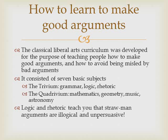There are ways to learn how to make good arguments. The classical liberal arts curriculum was developed for the purpose of teaching people how to make good arguments and how to avoid being misled by bad arguments — it consisted of seven basic subjects. The verbal arts portion was called the trivium, consisting of grammar (the study of how words are altered and combined to form meaningful sentences), logic (the study of how sentences are combined to form arguments), and rhetoric (the art of persuasion). The quadrivium was the quantitative portion, consisting of mathematics (the art of number), geometry (the art of number and space), music (the art of number and time), and astronomy (the art of number, space, and time).